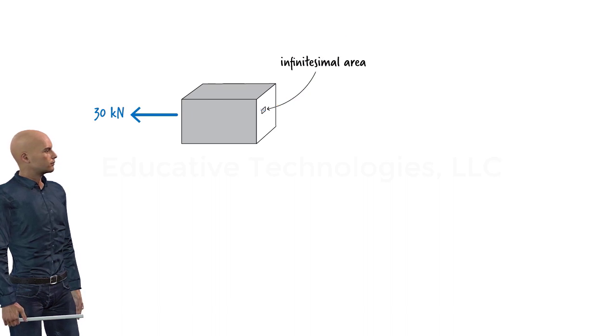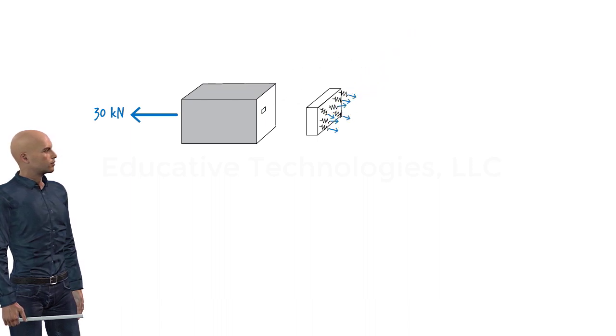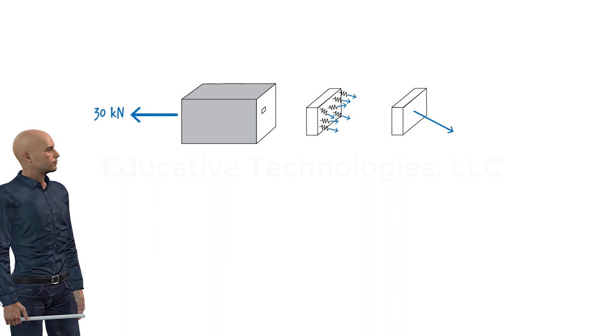Acting on this infinitesimal area are a large number of atomic spring forces being developed due to the tensile force in the member. If we add up all of these forces, we get a single three-dimensional resultant force vector.